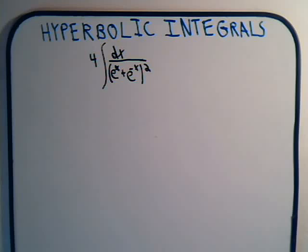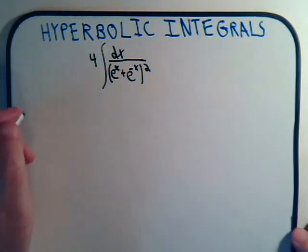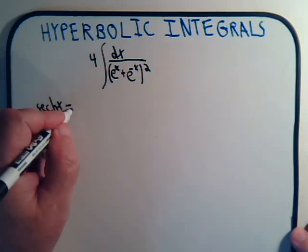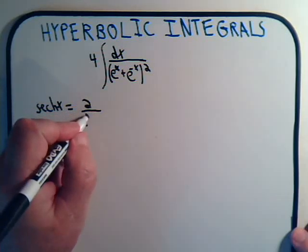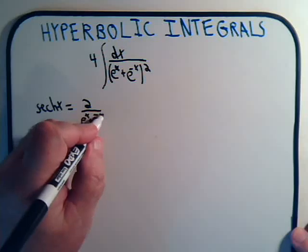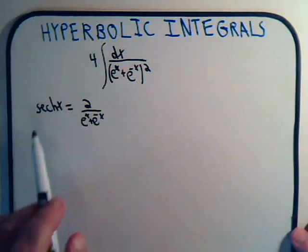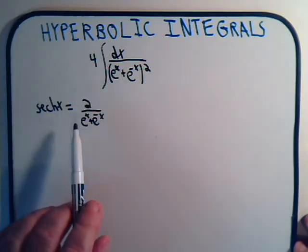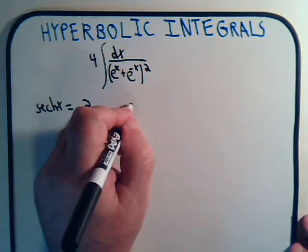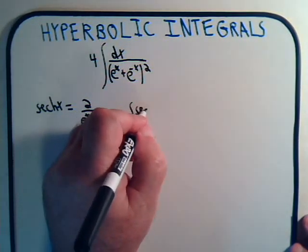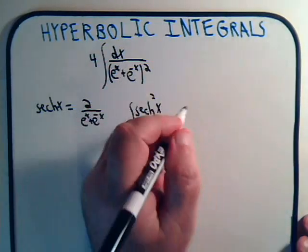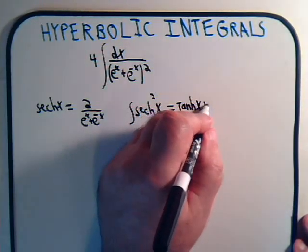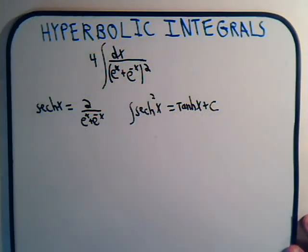The first thing when looking at it, hopefully, will make you think that the hyperbolic secant of x is 2 divided by e to the x plus e to the minus x. And if I had this squared, that would be 2 squared, or 4, divided by this squared. So this integral here would just be the integral of the hyperbolic secant squared of x, which equals the hyperbolic tangent of x plus a constant — no problem.